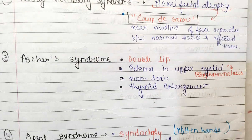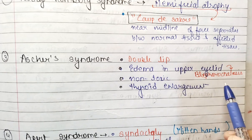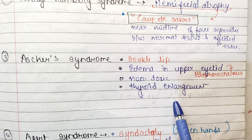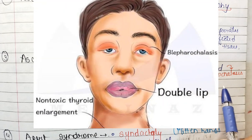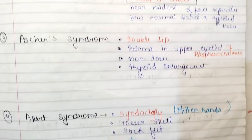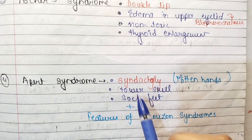Then we have Ascher syndrome. Ascher syndrome presents with double lip, blepharochalasis, and non-toxic thyroid enlargement. If you find these three things together, it is Ascher syndrome. Blepharochalasis is an edema of the upper eyelid.